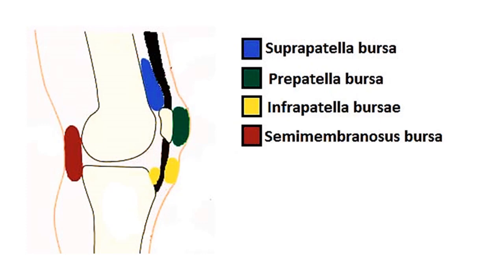There are several types of bursae around the knee. A bursa is a synovial fluid sac found between moving structures in a joint; their aim is to reduce wear and tear. There are four bursae in the knee joint. The first is the suprapatellar bursa, which is an extension of the synovial cavity of the knee joint, located between the quadriceps femoris and the femur. The prepatellar bursa is found between the apex of the patella and the skin, making it vulnerable to friction during knee flexion and pressing.